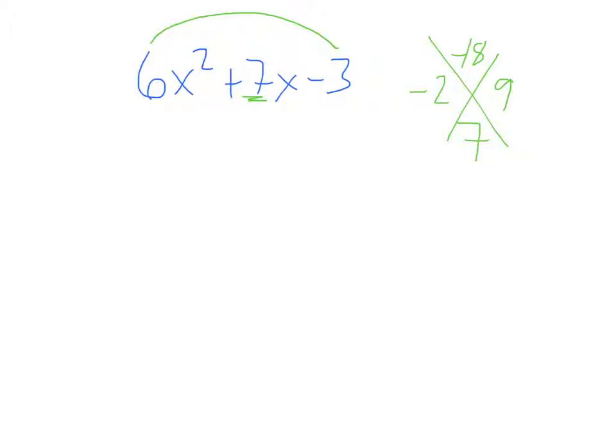Now we're going to be doing some factoring by grouping. Let's write this out. We have 6x squared, and I'm going to change the 7x right here. I'm going to change the 7x to negative 2x plus 9x. We know that negative 2x plus 9x is 7x, so we just broke this down into negative 2x plus 9x, and we'd have negative 3.